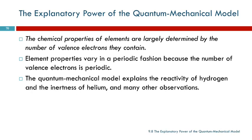The number of valence electrons has a big impact on the chemical properties of elements. The reason that there is this periodic variation in element properties is because the number of valence electrons is also periodic.